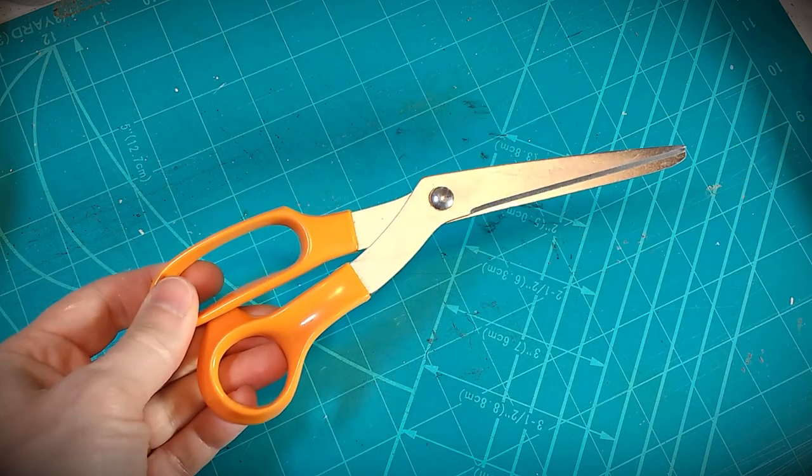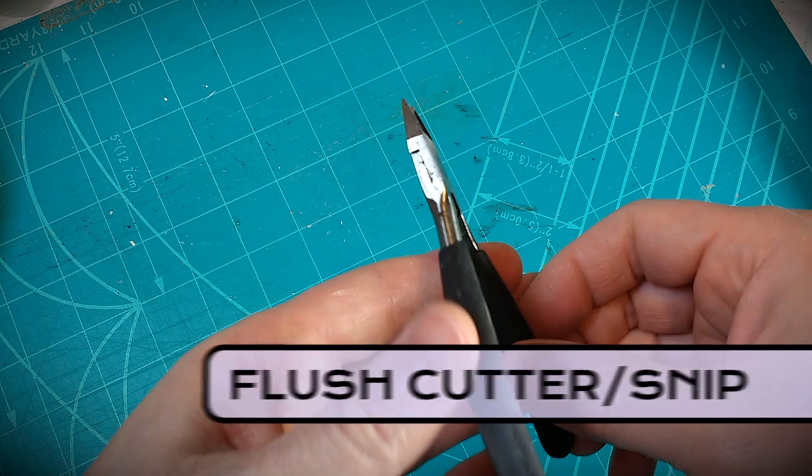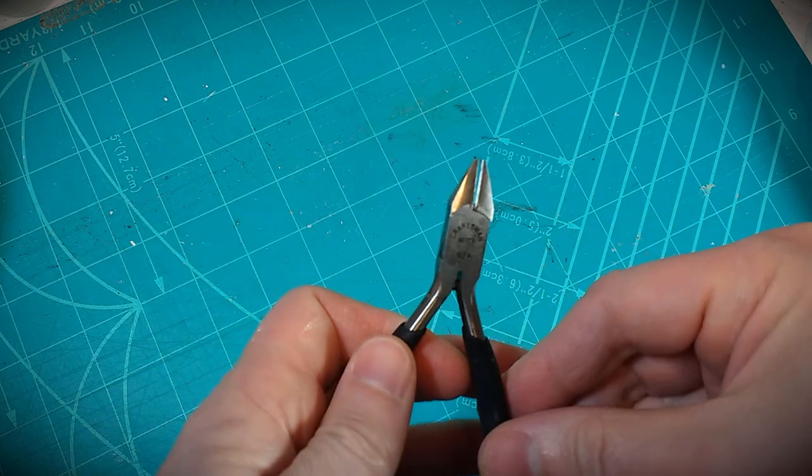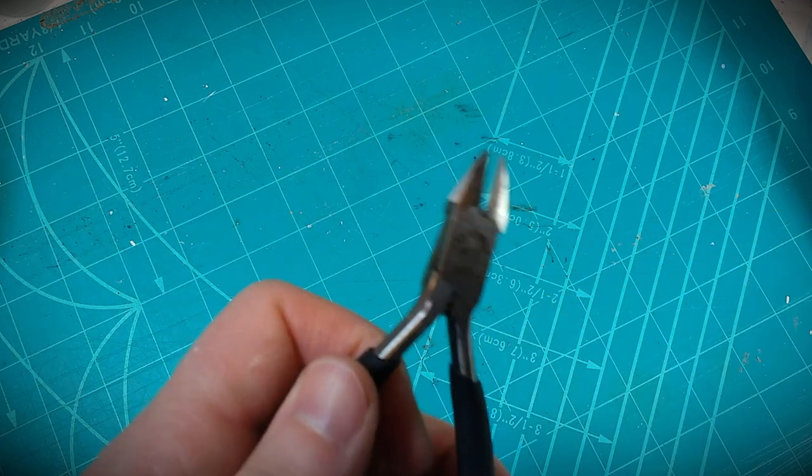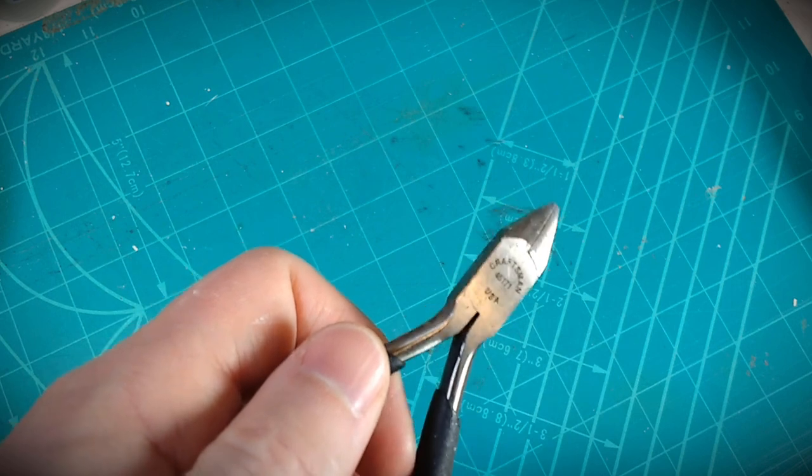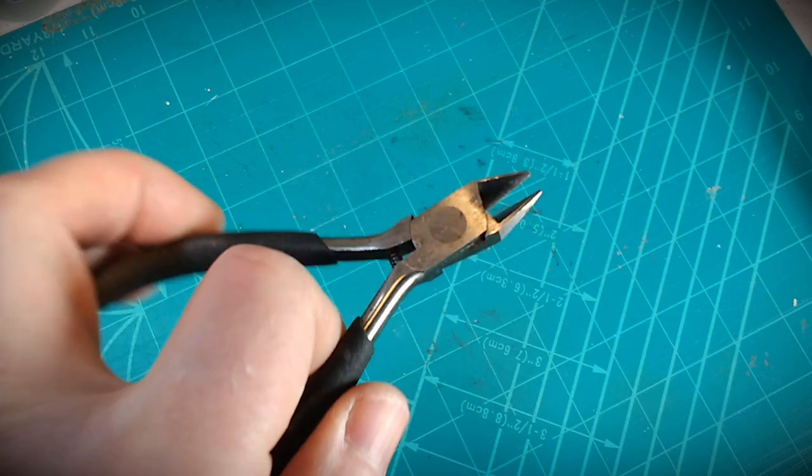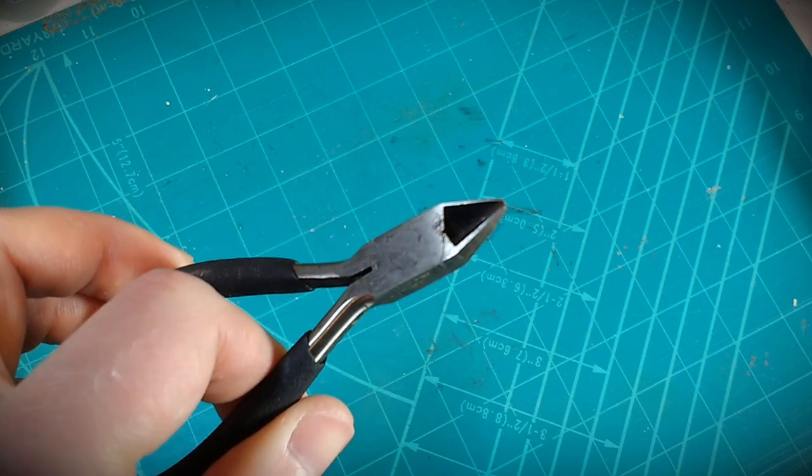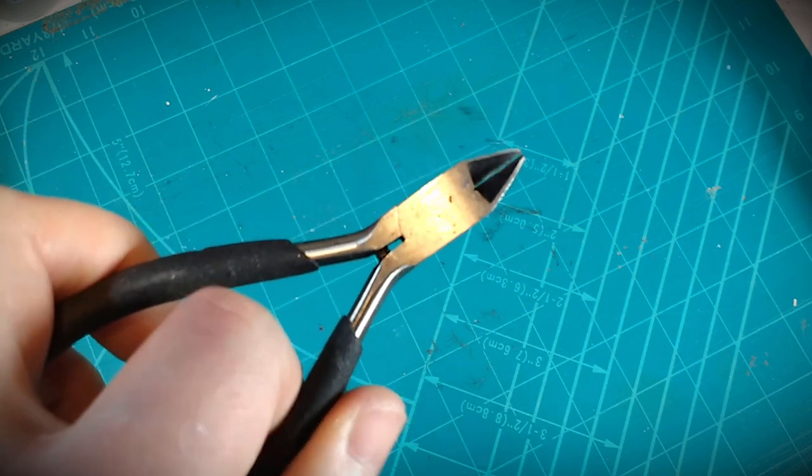This little flush cutter snip type tool is great for trimming down real close to a surface. Use it for wire. I've used it to snip out rivets on figures in order to make a repair. It gets right into tight spaces that way.